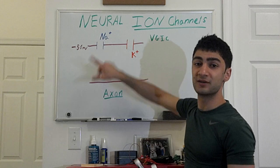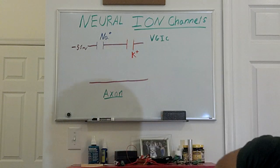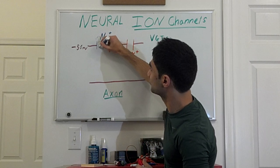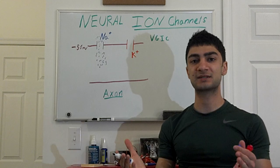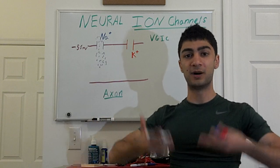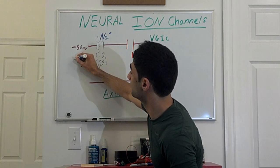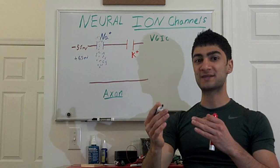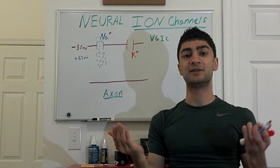This voltage-gated ion channel is going to open up. What's going to happen as a result is that these sodium ions are going to start flowing into the cell and flooding in. When you have a positive ion flowing into a negatively charged cell, it's going to cause the cell membrane to become more positive — so instead of negative 50, now we're looking at somewhere around positive 65 millivolts. That's called depolarization.